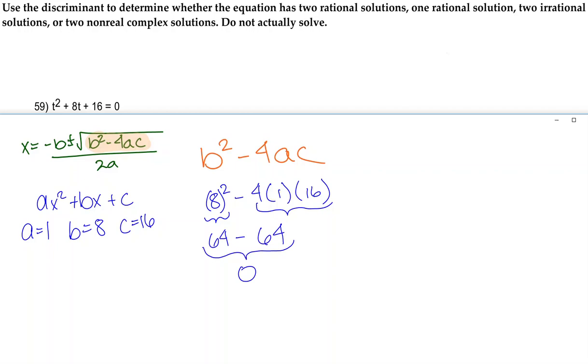So what does that tell us? If our discriminant is 0, what kind of solutions will we have? If the discriminant is negative, meaning it is less than 0, then you're going to have two non-real complex solutions. If it's equal to 0, you're going to have one rational solution.